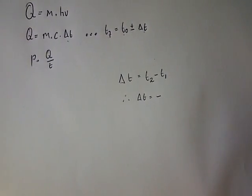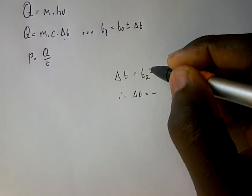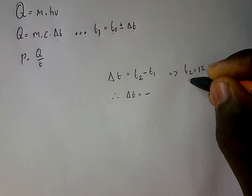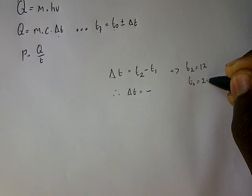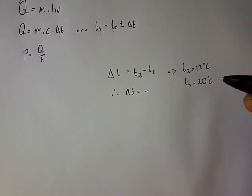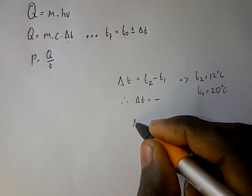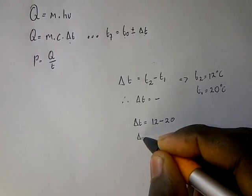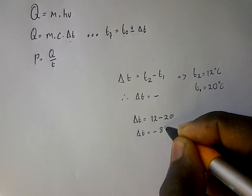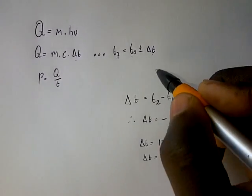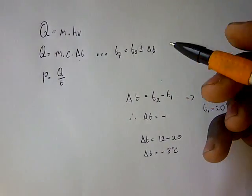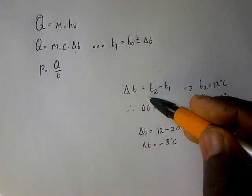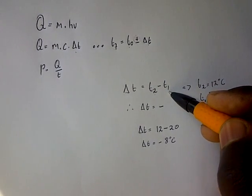For example, if our final temperature is 12 degrees Celsius and our initial temperature T1 is 20 degrees Celsius, then the change in temperature will be 12 minus 20, which gives us negative 8 degrees Celsius. If the change in temperature is positive, that means our final temperature is bigger than our initial temperature.